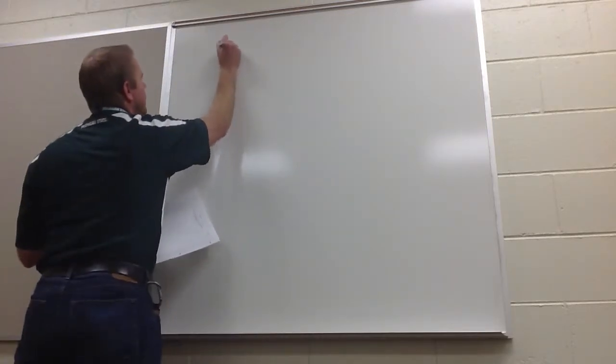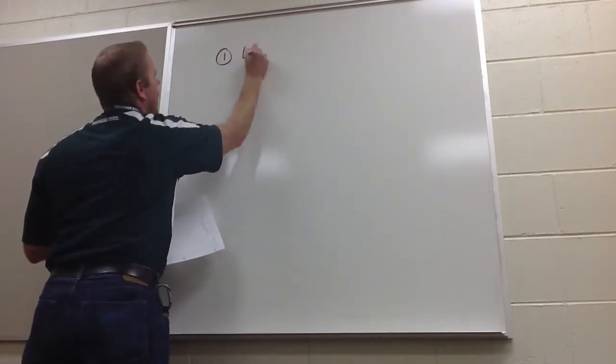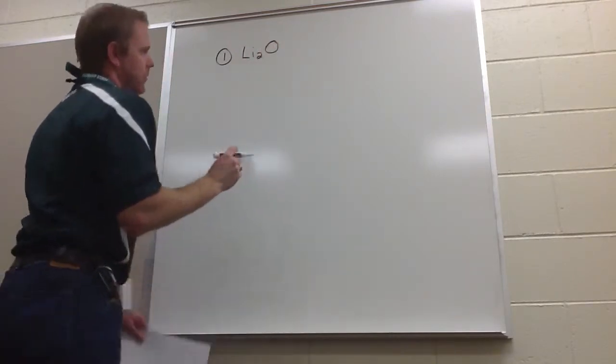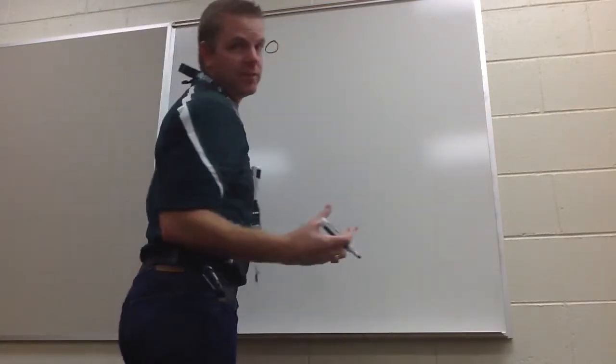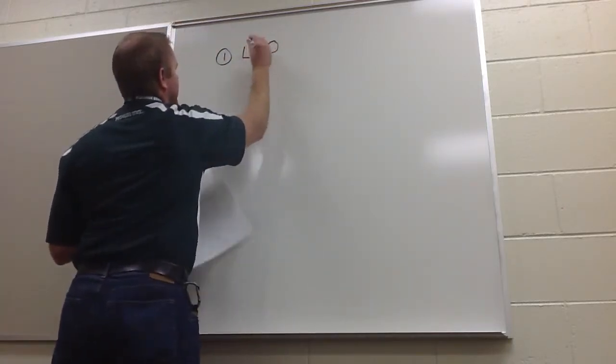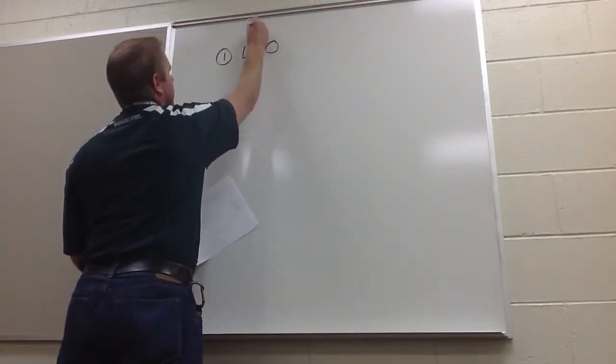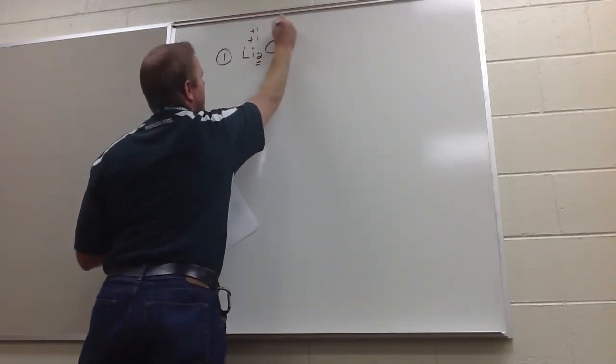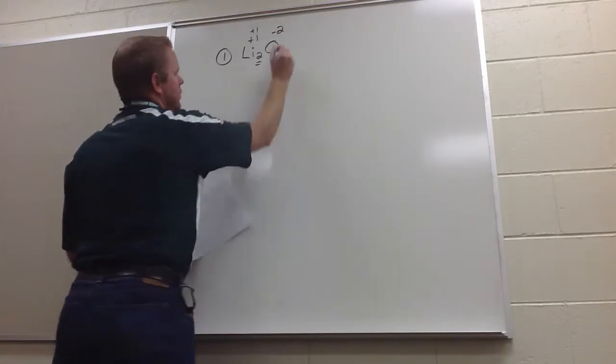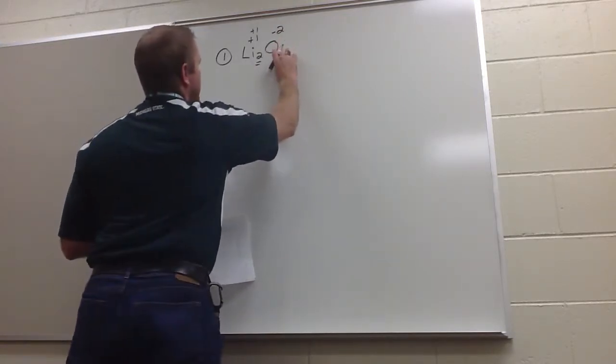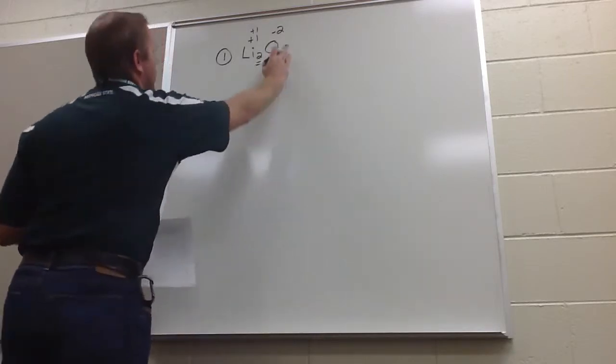So number one says Li2O. What it wants you to do is take the chemical formula and give its name. The reason that there are two lithiums here is because lithium carries a plus one charge. You need two of them to balance out oxide, which has a negative two charge. There's one of them. It's kind of redundant for us to write the one, so that's why you don't see it. You just see it as Li2O.